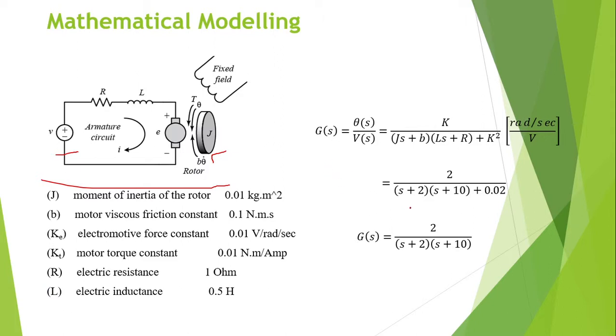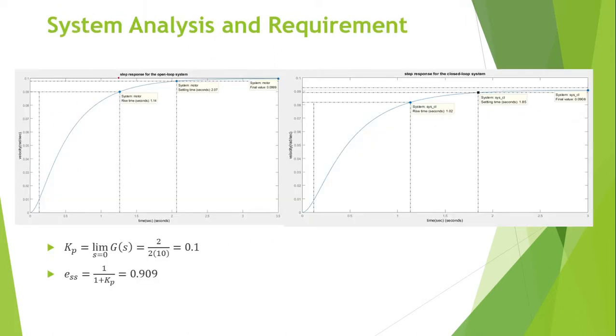We get this transfer function and then simplify it by neglecting 0.02 because it's too small and doesn't give any effect. This shows the open loop step response and the closed loop step response. You can notice that the steady state error is very big.